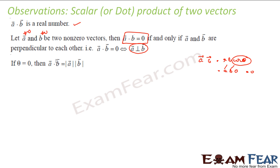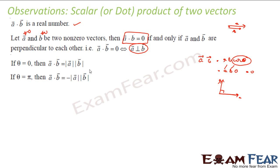Similarly, if theta is zero, then A dot B is simply AB — meaning if A and B are in the same direction, you just multiply their magnitudes. If A and B are perpendicular, the dot product is zero, because the B vector has zero impact in the direction of A. If theta equals pi, A dot B is minus AB — if B is in the opposite direction, it has a full negative impact. That is why A dot B is minus the magnitude of A into magnitude of B.